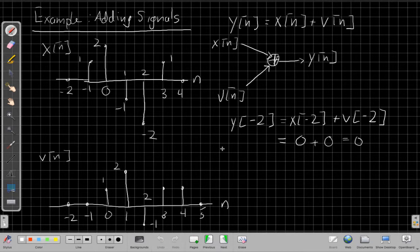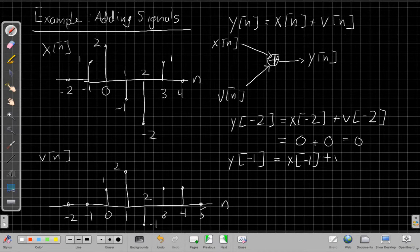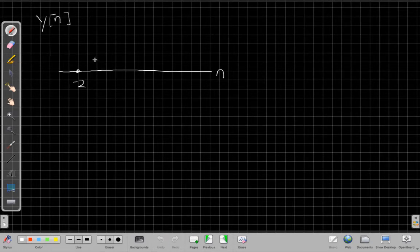If I hop back to my previous page, I can go on and say, well, y at minus 1 would be x at minus 1 plus v at minus 1, which is equal to, well, let's see, x at minus 1 now has a non-zero amplitude. So I have 1 for x at minus 1. v at minus 1, though, is still 0. So the new signal y at time index minus 1 would have an amplitude equal to positive 1. So we can go add that to our graph.